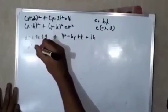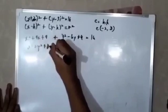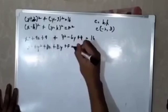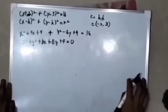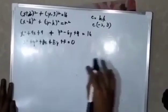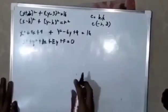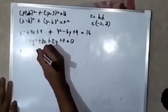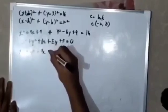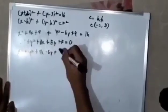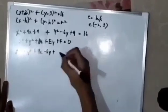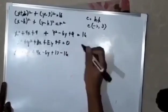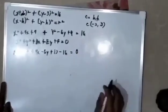Since the general form is x squared plus y squared plus dx plus ey plus f equal to 0, we need to move the 16 to the other side. So we get x squared plus y squared plus 4x minus 6y plus 4 plus 9, that is 13, and negative 16 is equal to 0.